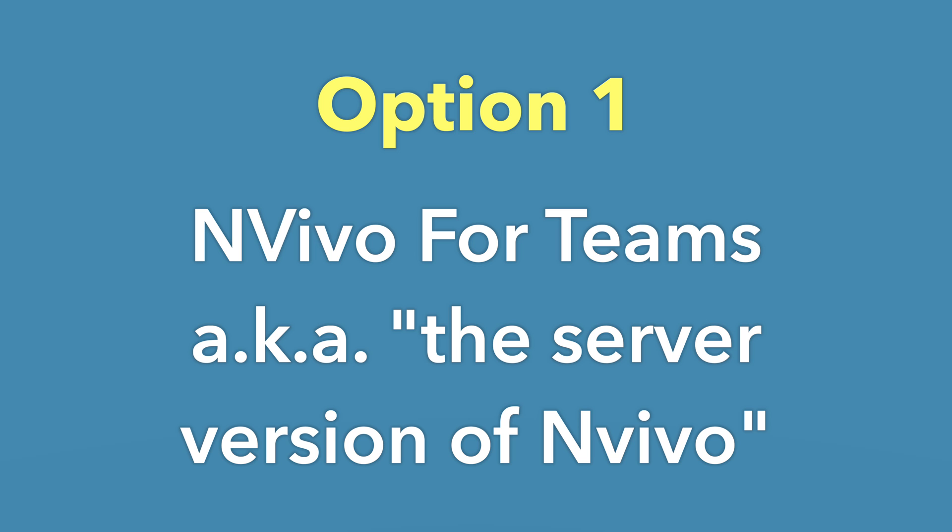Today we are going to talk about working as a team in NVivo. There are two basic ways to do this. One is called NVivo for Teams, also known as the server version of NVivo. This is an add-on to your basic NVivo that you purchase or might have available through your institution. This is the only way, currently, for people to work simultaneously in the same project.